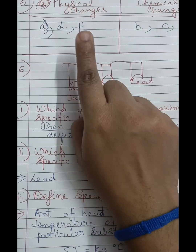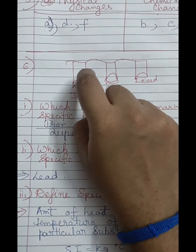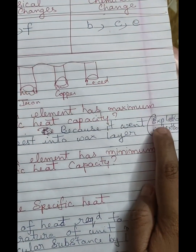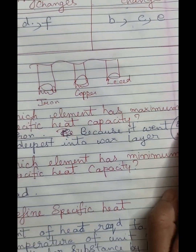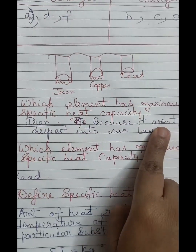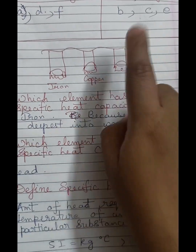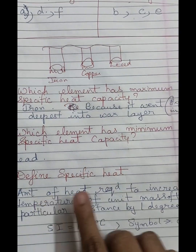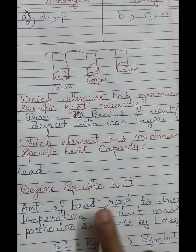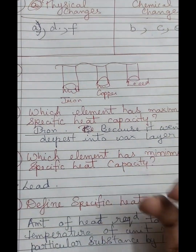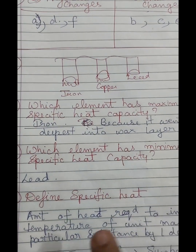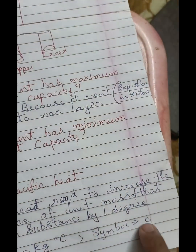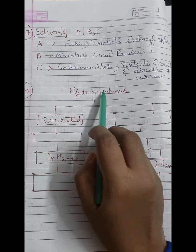Question 6: Among iron, copper, and lead — iron has the maximum specific heat capacity because it penetrated deepest into the wax layer. Lead has the minimum specific heat capacity. Definition of specific heat: the amount of heat required to increase the temperature of a unit mass of any substance by one degree Celsius; symbol is C.